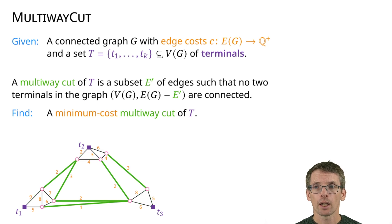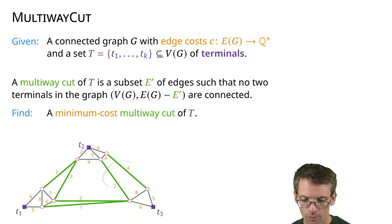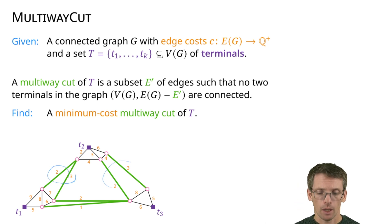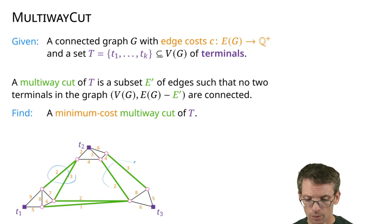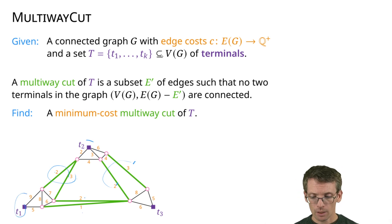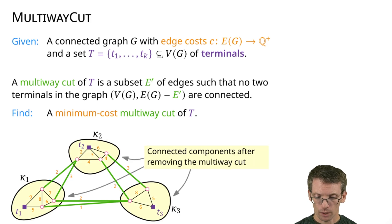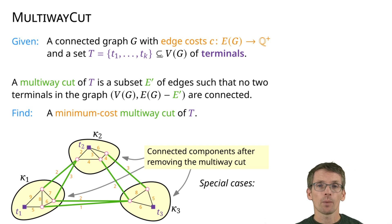Looking at this example, the following edges give us a min-cost cut: the two edges down here and those two edges. The sum is 3 + 2 + 3 + 2 + 2 + 2 + 1 = 13, and all terminals are in different connected components after removing the green edges.